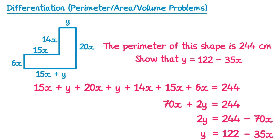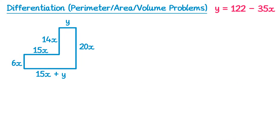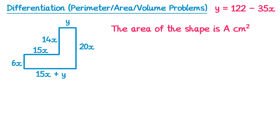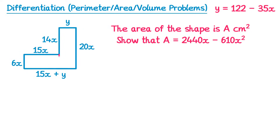Now this is a typical part A for a question like this. We're going to keep this at the top because we're going to need that soon. For the next part of the question we're told the area of the shape is A centimetres squared — so we're not given an actual value for this one. We need to show the area is 2440x minus 610x squared. So let's go ahead and try and calculate the area of this shape. I'm going to split the shape into two rectangles and the area of the rectangle on the left would be 15x times 6x which gets you 90x squared, and the area of the right rectangle would be 20x times y, so 20xy.